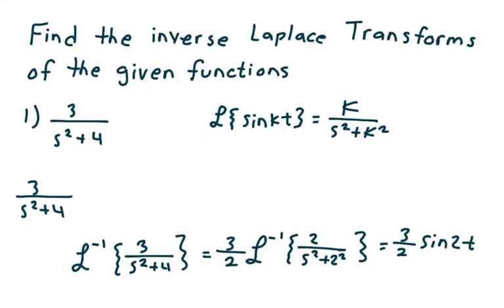In this video, we are going to find the inverse Laplace transforms of the given function. Number one, suppose I'm given 3 over s squared plus 4, and I want to find the inverse Laplace transform of that. We know that the Laplace transform of sine of kt is k over s squared plus k squared. So I want to try and work backwards. Start with 3 over s squared plus 4, which is equal to 3 times 1 over s squared plus 2 squared.